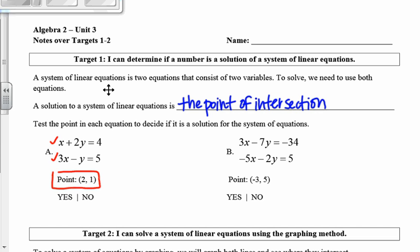In order to do that, we're going to plug in our point for x and y. So 2 is x and 1 is y. I'm going to see if that's a true statement in both these equations. In the top one, 2 plus 2 times 1, does that equal 4? Is that a true statement? It sure is. So then we test it in the second one.